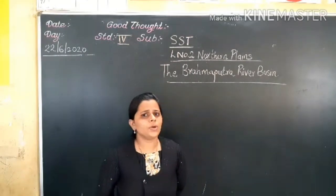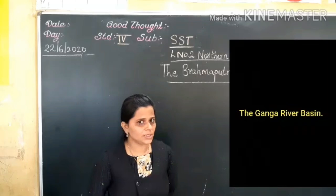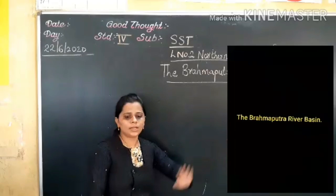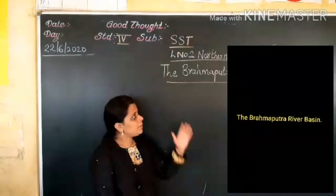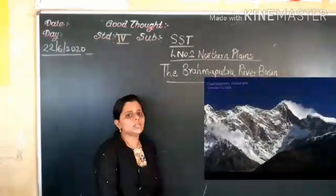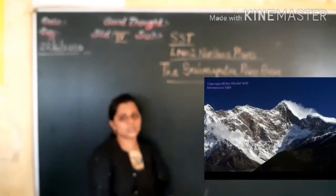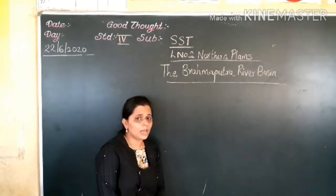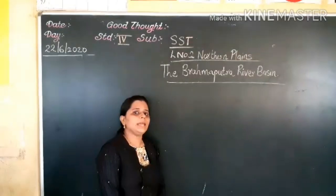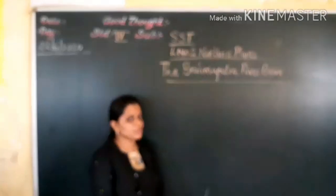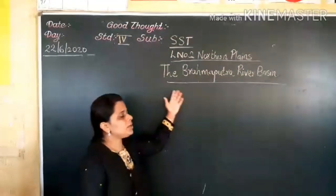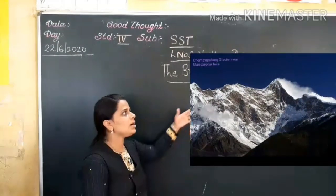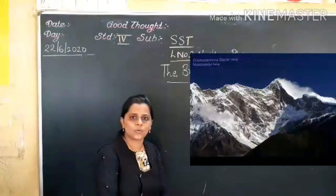In the earlier video we learned about the Ganga river basin. The Ganga originated from Gangotri glacier. Now the Brahmaputra river basin — it originated from Siampandam glacier near Mansarovar lake. You will see that the Brahmaputra river starts in Tibet where it is known as river Siampandam.